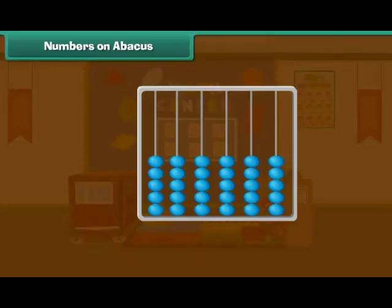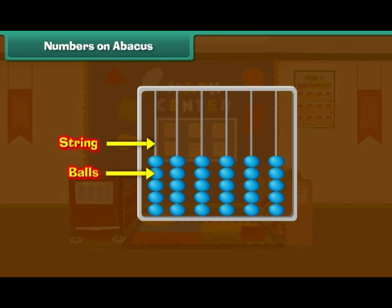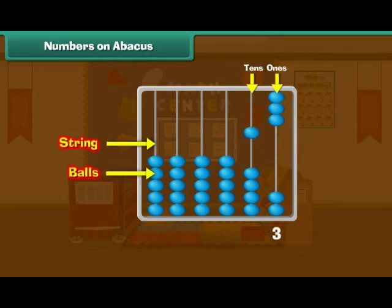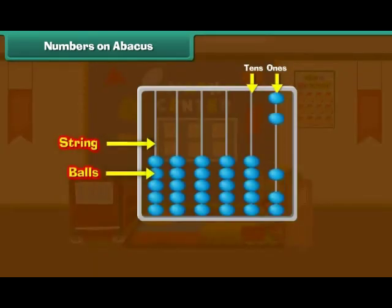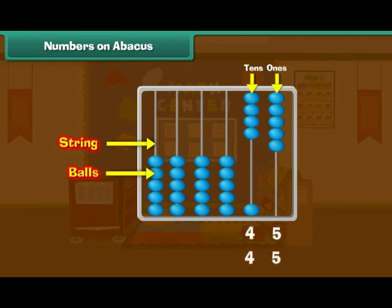Numbers on abacus. We can use an abacus for counting. This is an abacus — it has many strings and each string has many balls. We use the rightmost string to count ones, and the next string to count tens. This abacus has three balls in the ones string and two balls in the tens string, so the number is 23. Look at this abacus — it has five balls in the ones place and four balls in the tens place. Therefore, the number is 45.